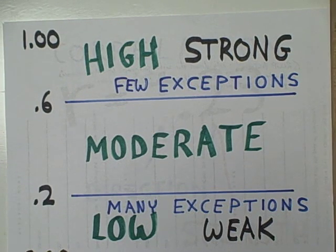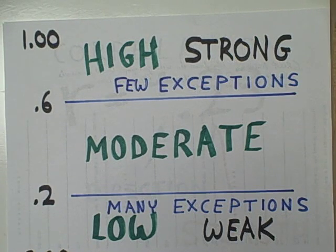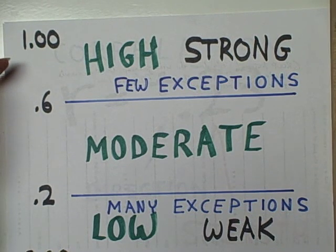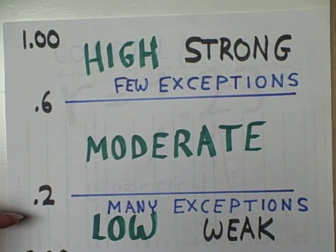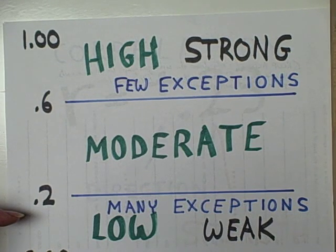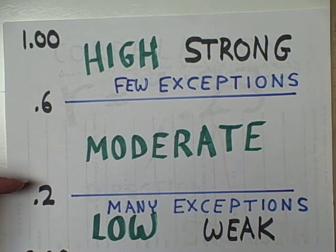In the real world, correlations are not perfect positives, perfect negatives, or zero — especially in the behavioral sciences like psychology and sociology. Most correlations are somewhere in between. Correlations that are close to being perfect are called high or strong, meaning they have very few exceptions to the direct or inverse trend. Correlations that are close to zero represent only a very weak or low trend, with many exceptions. Many correlations also fall in the moderate range.